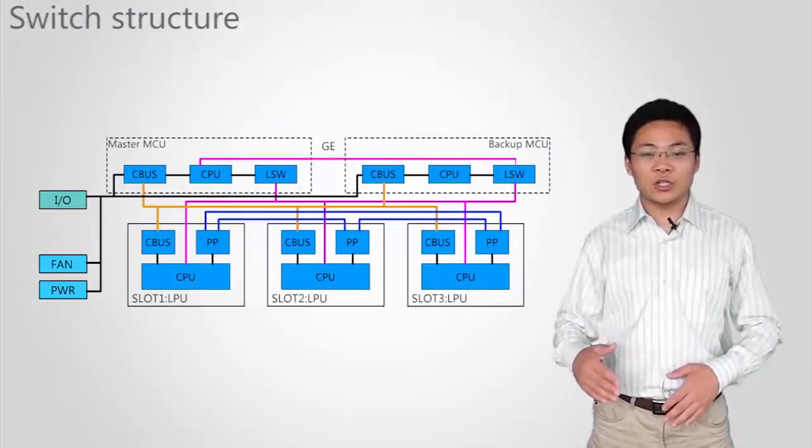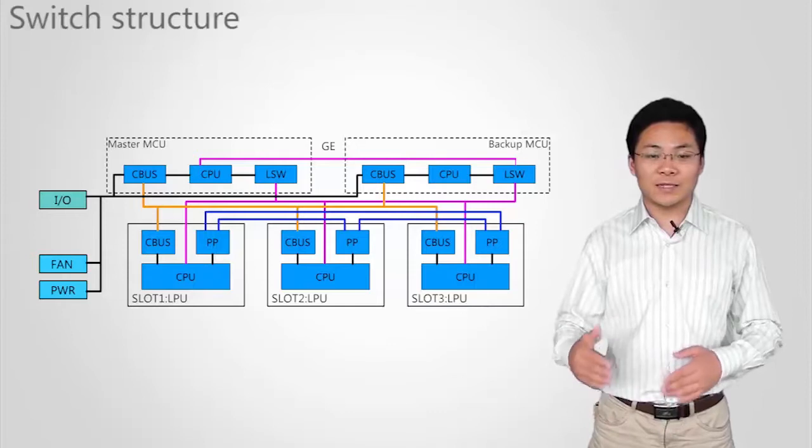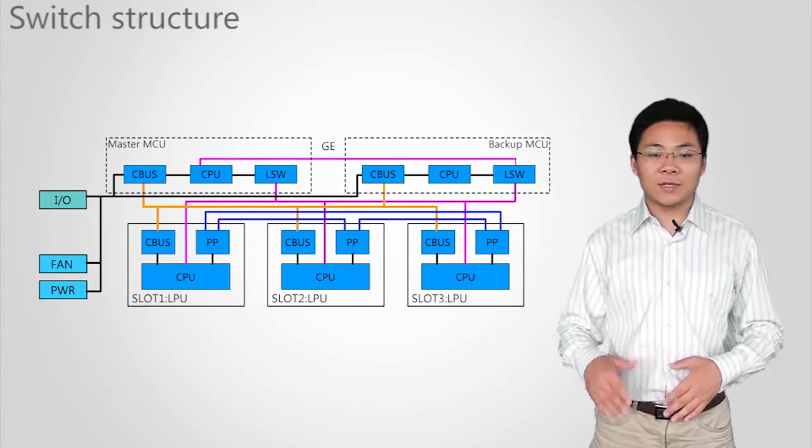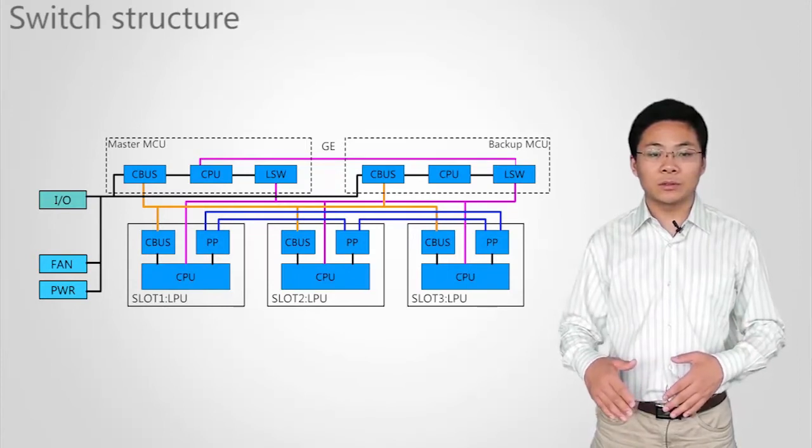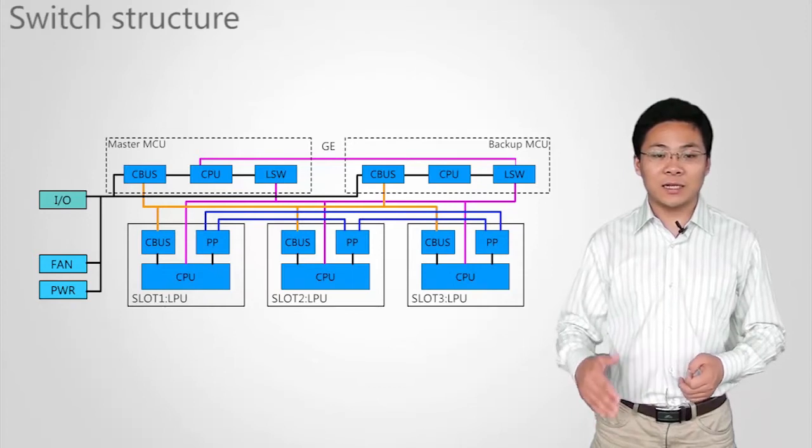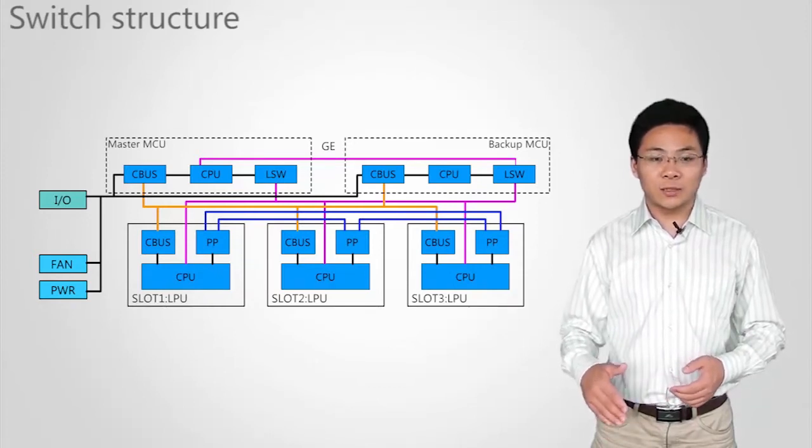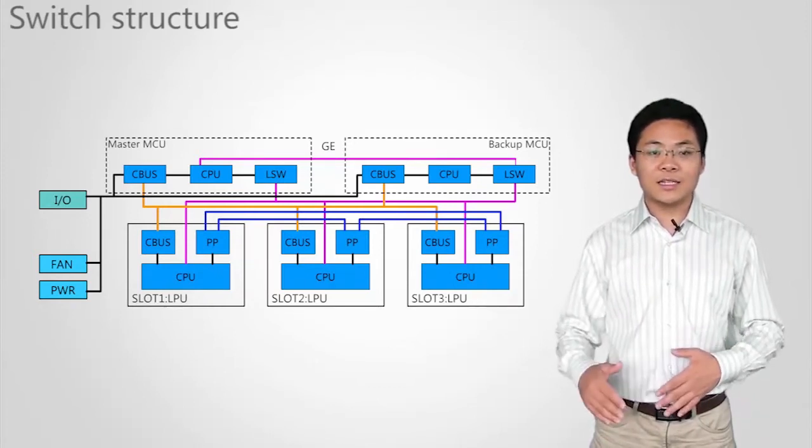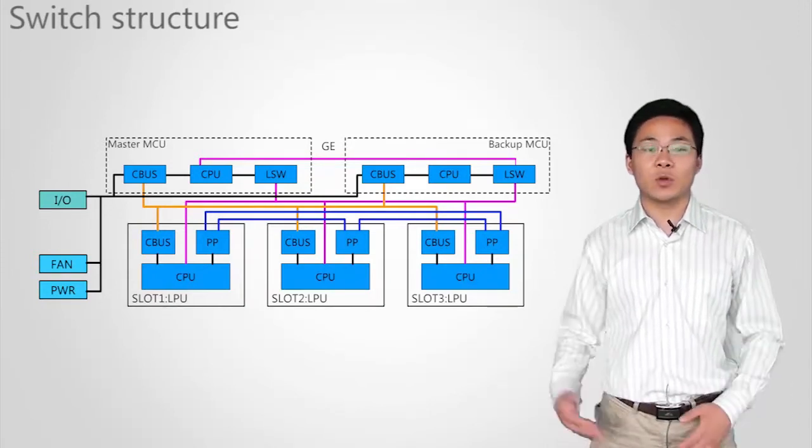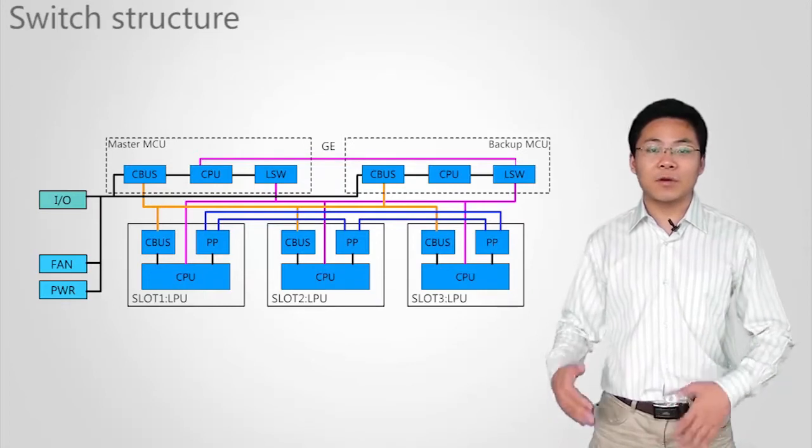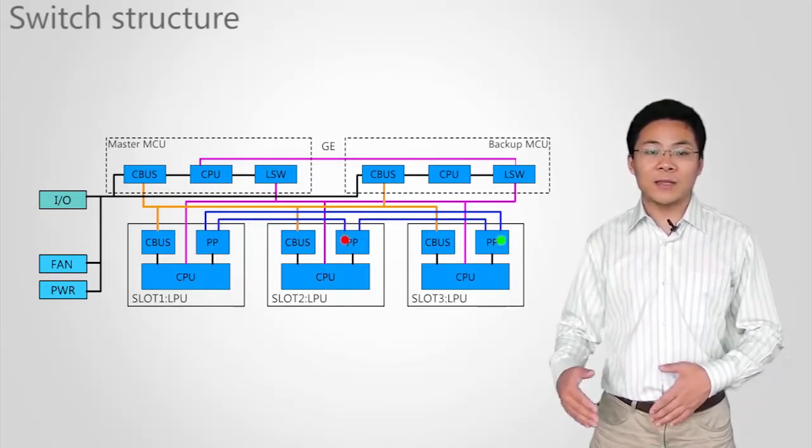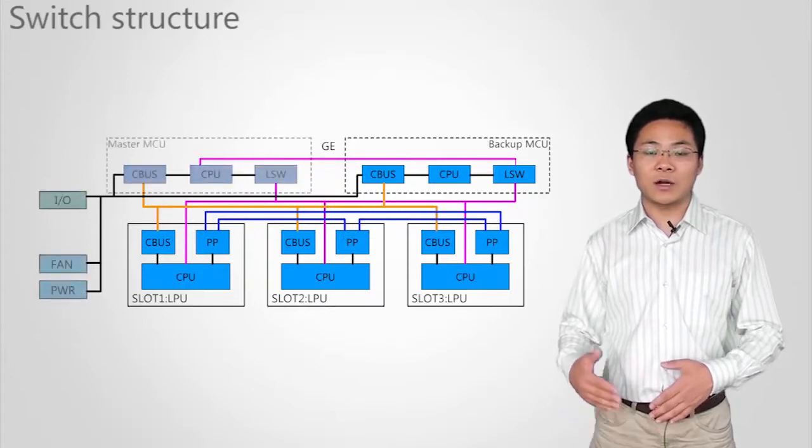This figure shows the hardware structure of S9703. S9703 uses an MCU as the main control board. The MCU has no switching fabric unit and integrates the CMU functions. S9703 differs from S9706 and S9712. On S9703, LPUs forward packets to each other and the MCU monitors the device running status.